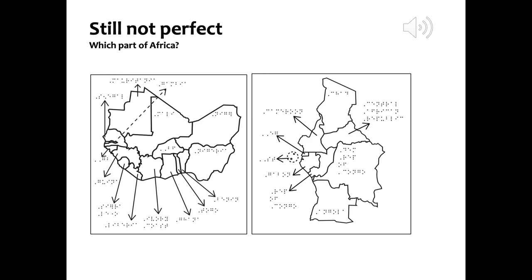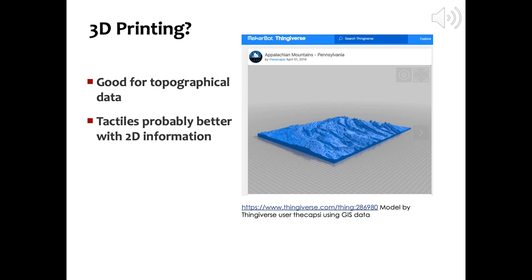Some of you may be wondering about 3D printing, and there is definitely a use case. The model shown is from Thingiverse user the Capsi (T-H-E-C-A-P-S-I), and it shows how the mountains of central Pennsylvania, particularly the Appalachians, are laid out. In this region, the Appalachians curve from a north-south orientation found in Virginia and Maryland to an east-west orientation found in eastern Pennsylvania. State College is located on the outer edge of this curve. There are limitations: 3D prints may need to be of higher quality to eliminate ridges from the deposit of plastics, and designs need to include curves instead of sharp edges. It's also important to add some indication — perhaps a notch or a tab or a stick-on braille label — to indicate which direction is north.